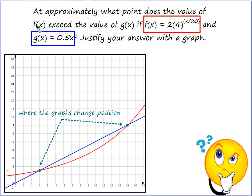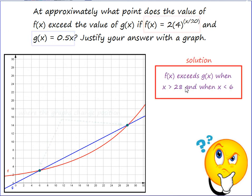The question asks, where does f(x) exceed the value of g(x)? It's not actually looking for a specific point on my graph. It's looking for a section of graph where that happens. So I could write f(x) exceeds g(x) when x is greater than 28 and when x is less than 6.